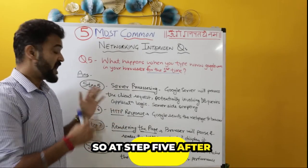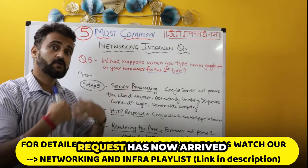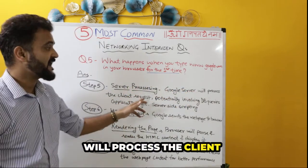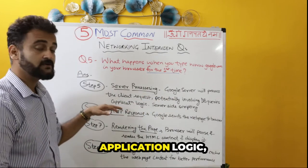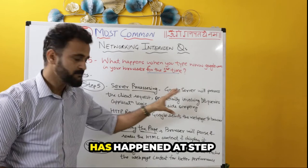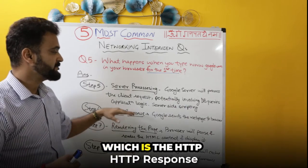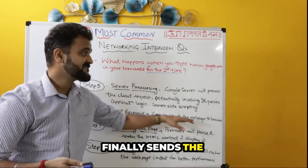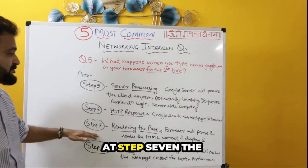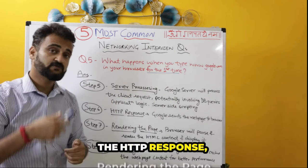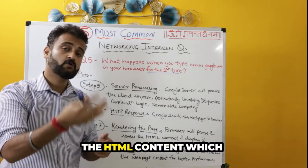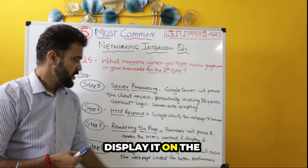At step five, server processing happens because the request has now arrived at the Google server. The Google server processes the client request, potentially involving database queries, application logic, and server-side scripting to formulate the response. Once this processing has happened, step six is the HTTP response, where Google finally sends the web page back to the browser. It looks like a long journey, but it happens in a split second. At step seven, the rendering of the page happens: the browser parses the HTML content received from the web server and displays it in the browser.